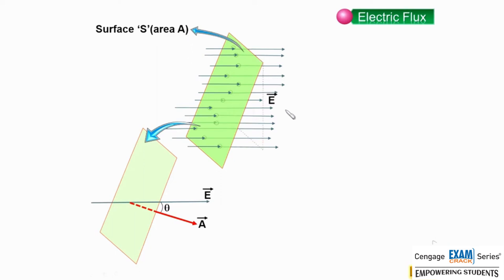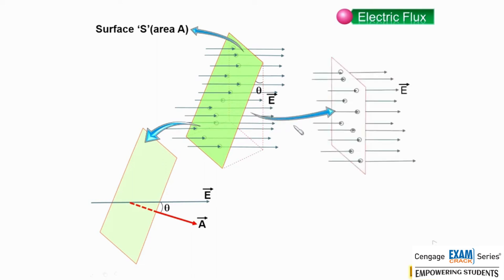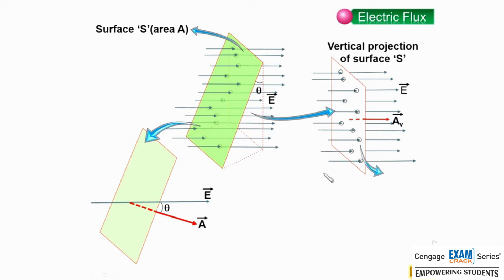We can make the projection of this area on the vertical plane so that the vertical projected area becomes perpendicular to the electric field lines. The area vector is making angle theta with the horizontal. Since the area vector and surface are perpendicular, the surface makes angle theta with the vertical. The vertical projection of this area is A cos theta.